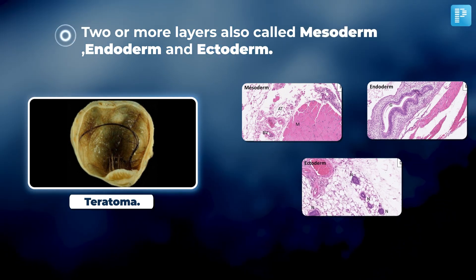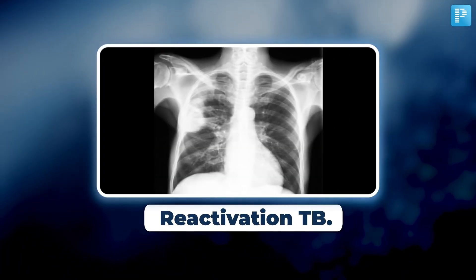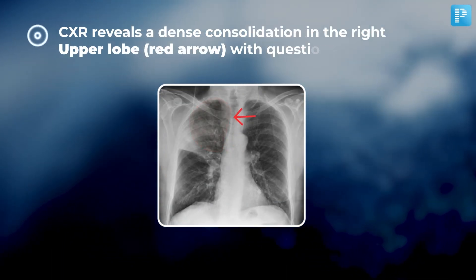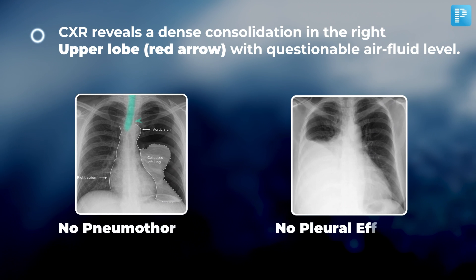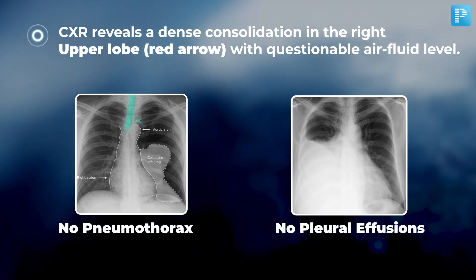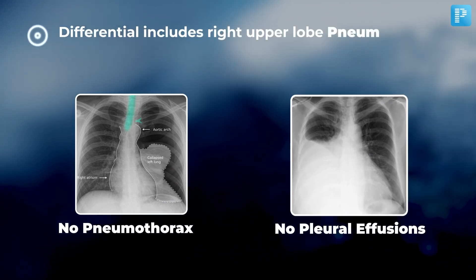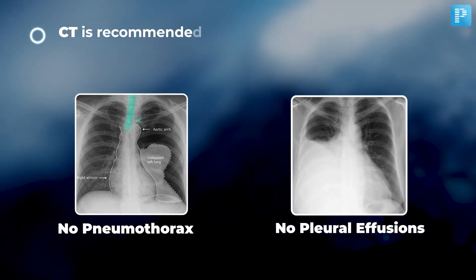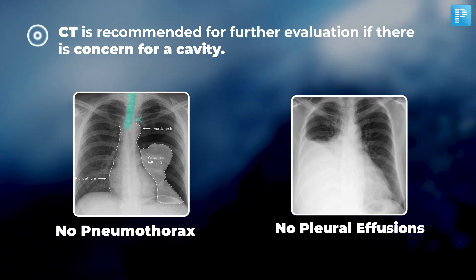The last image from this video was an X-ray of reactivation TB. Chest X-ray reveals a dense consolidation in the right upper lobe with a questionable air-fluid level. No pneumothorax, no pleural effusion. Differential includes right upper lobe pneumonia or tuberculosis. CT is recommended for further evaluation if there is concern for a cavity.